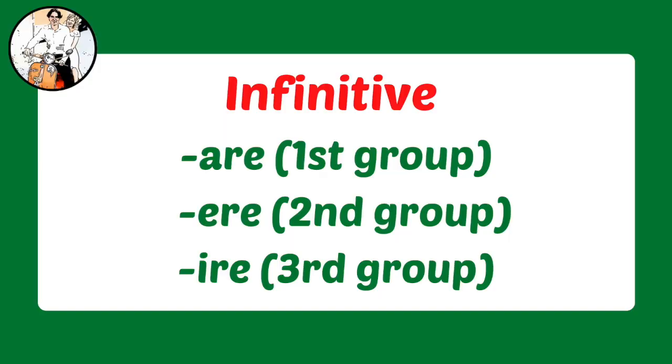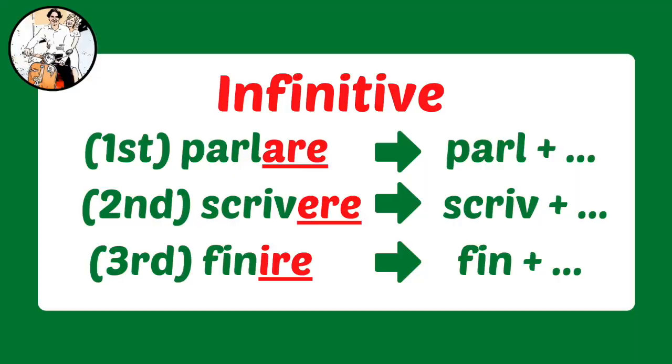The regular forms of the futuro semplice are very, very simple. Remember the three groups we learn in Italian in 30 days? Are, ere, ire. You should remember that — it's essential. If you don't remember, go back to Italian in 30 days and brush it up. So we have these endings: are, ere, and ire. If we remove the endings, we have the stem of the verb.